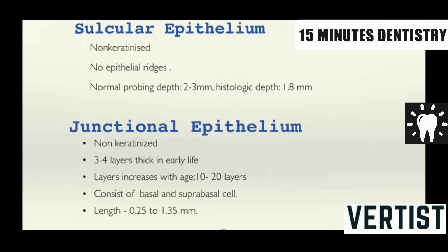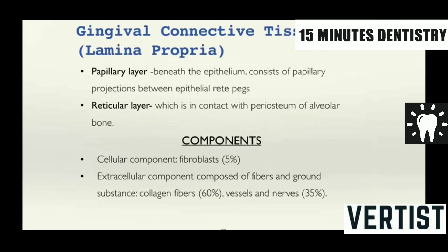The sulcular epithelium is non-keratinized; non-epithelial cells are seen. Normal probing depth is 2–3 mm and histologic depth is 1–8 mm. The junctional epithelium is non-keratinized and consists of basal and suprabasal cells. The connective tissue papillary area consists of projections into the epithelium and the reticular layer which is in contact with the periosteum of the alveolar bone.